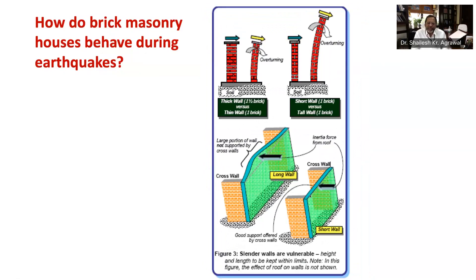Having understood the behavior of masonry buildings, now let's understand how to improve the behavior of masonry walls. Masonry walls are slender because of their small thickness compared to their height and length. The simplest way to make these walls behave well during earthquake shaking is to ensure box-like integral action of the entire building — that is, walls act together as a box along with the roof at the top and with the foundation at the bottom. The first step is ensuring good connection between walls by ensuring good interlocking of masonry courses at junctions.